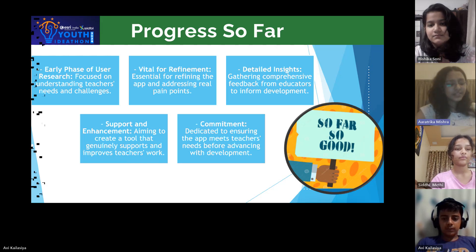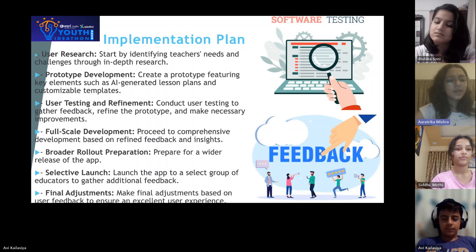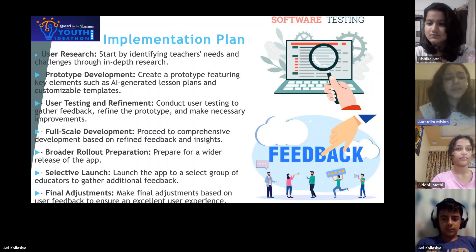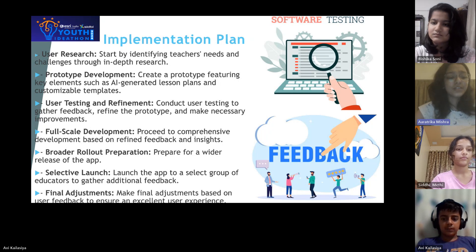Now I would like to introduce you to our implementation plan. Our implementation strategy for Teach Ease is clear and step by step. We start with thorough user research to understand teachers' needs. Then we'll develop a prototype with key features like AI-generated lesson plans and customizable templates. After refining the prototype through user testing, we'll move to full-scale development, adding more features for a broader rollout. Finally, we'll launch it to a selective group of educators, gather feedback and make final tweaks to ensure the best user experience.